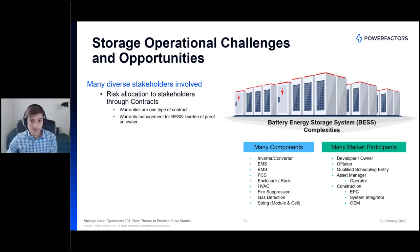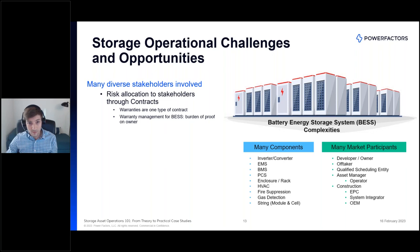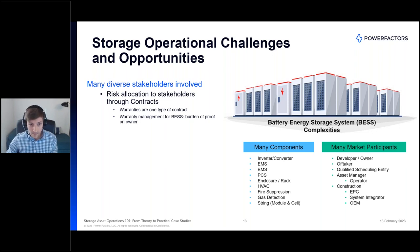Risk is best allocated to stakeholders through contracts, which, if done well, allocate risk to the party best equipped to control it. EPC warranties are one such type of contract. The golden rule of BESS — battery energy storage systems — operations is this: don't void your warranty. If you do find yourself needing to levy a warranty claim, the burden of proof is on the owner and the operator to prove that operations for the entire life of the system were within the bounds of the warranty operating envelope. It's quite a burden and it means you need to control your data.